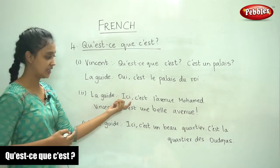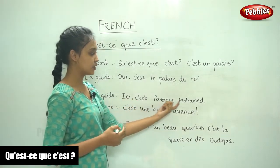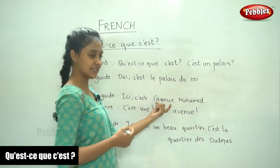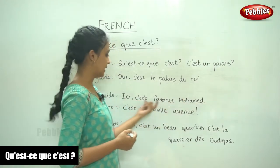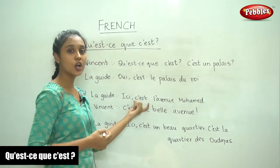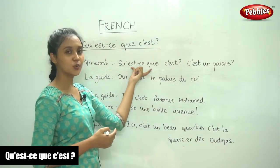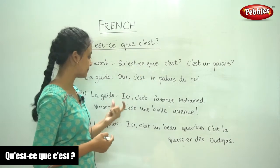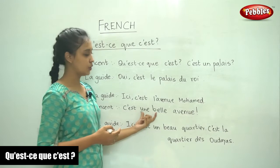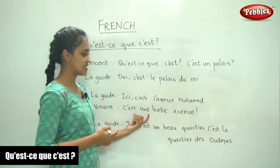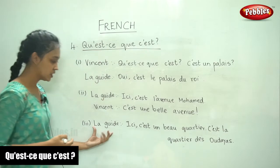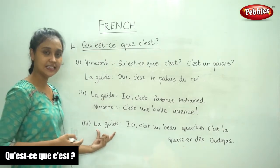You see here, 'C'est l'Avenue Mohamed' — it is the avenue, that is the street of Mohamed. That is how your answer will begin for the question 'What is this?' Vincent says 'C'est belle avenue' — it is a beautiful avenue.